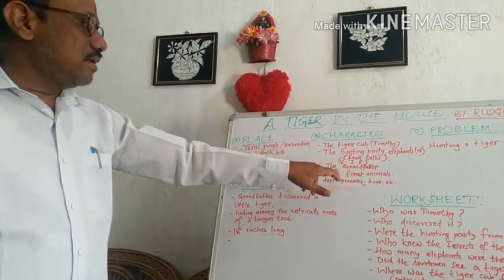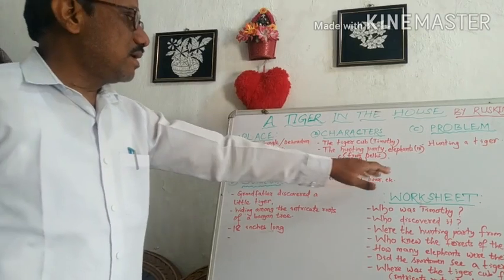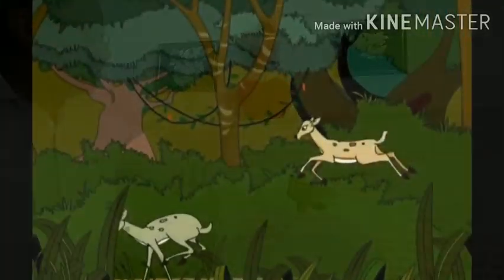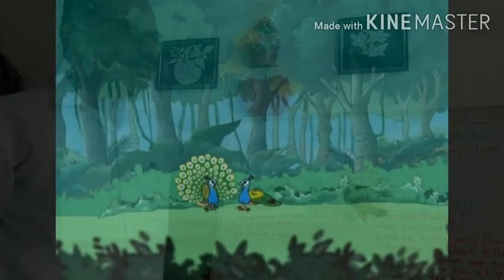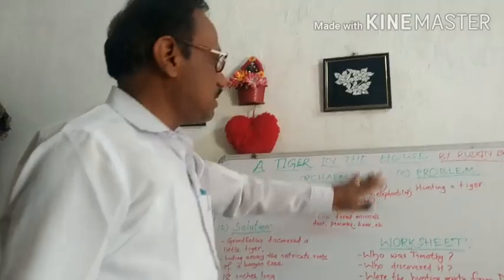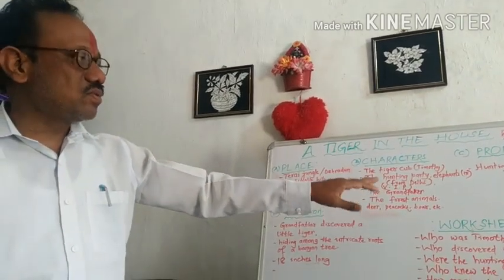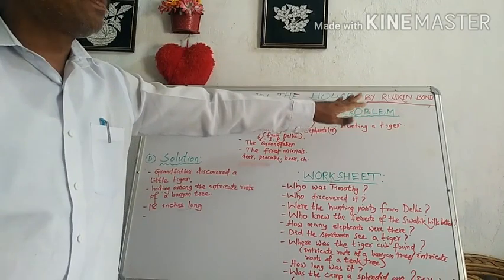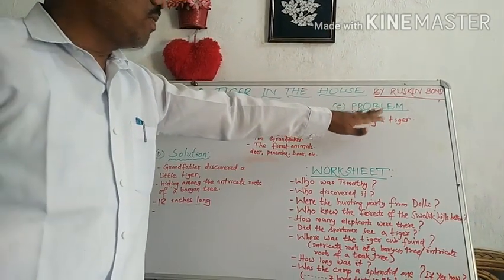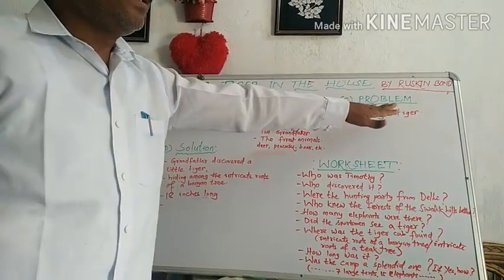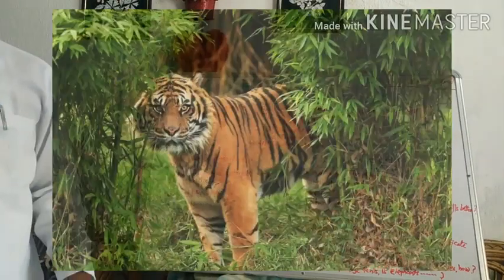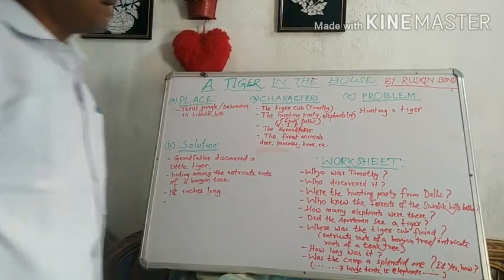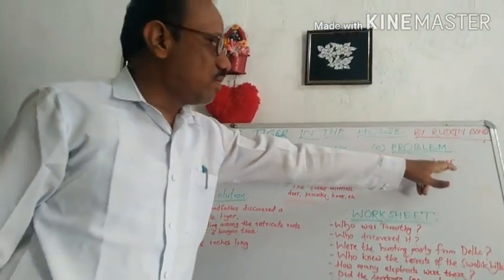The next characters were the forest animals — deer, peacocks, wild boar, etc. These are the characters in this part of the story. Then what was the problem? Their problem was they wanted a tiger. Their aim was to find a tiger, and this was the problem which arose near the Terai jungle.